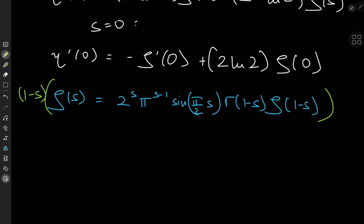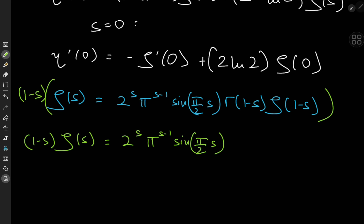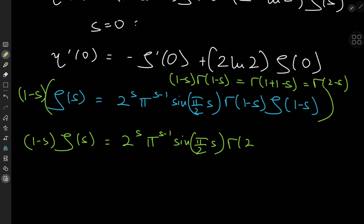Multiplying through, we get (1−s) · ζ(s) = 2^s · π^(s−1) · sin(πs/2) · (1−s) · Γ(1−s) · ζ(1−s). Now (1−s) · Γ(1−s) = Γ(2−s) by the functional equation for the gamma function, which avoids the singularity. We are left with a ζ(1−s) term at the end.